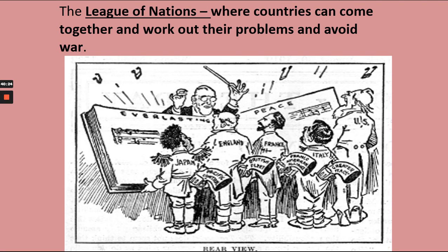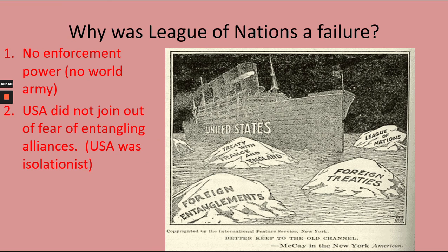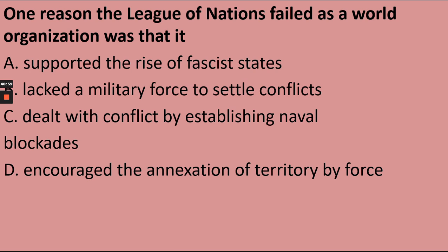The League of Nations meant well — it was supposed to prevent another major war. But it failed because Hitler ignored it in World War II, as did the Japanese. Why did it fail? They had no world army, no enforcement power, and the United States didn't join the League of Nations. The U.S. went back into isolationism and just didn't want to get involved anymore. That weakened it. One reason the League of Nations failed as a world organization: the answer is B — no power to enforce anything.